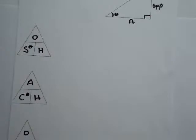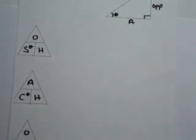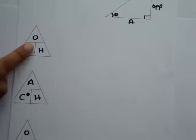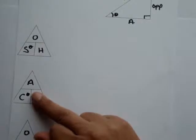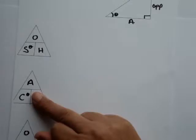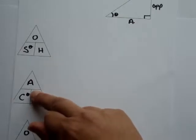To use these formula triangles, we cover with our finger the length or the angle that we need to find, and then apply the rule of the formula triangle. If we want to find sine theta in the right angle triangle, we cover that, and sine theta equals opposite over hypotenuse. If we wanted to find the hypotenuse, we cover the H, and the length of the hypotenuse would be opposite over sine theta — or in the cosine case, adjacent over cosine theta.